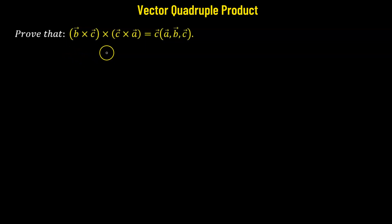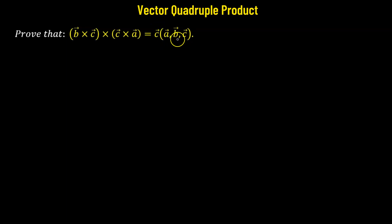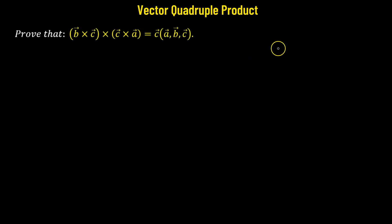In this problem we need to prove that (b cross c) crossed with (c cross a) equals vector c multiplied by the scalar triple product of a, b, and c. We'll begin with the left hand side, but before that let's quickly review the vector product of four vectors between a, b, c, and d.